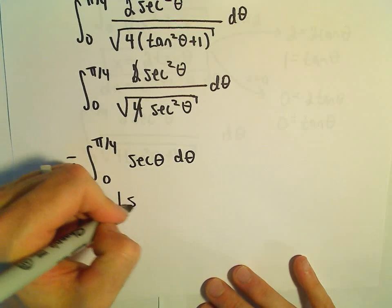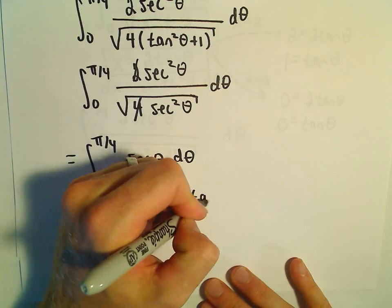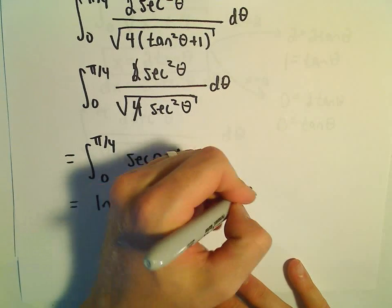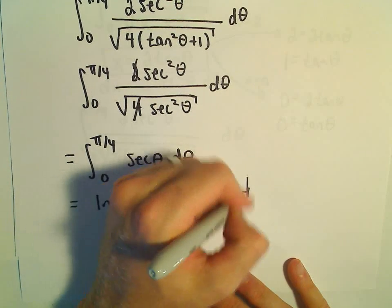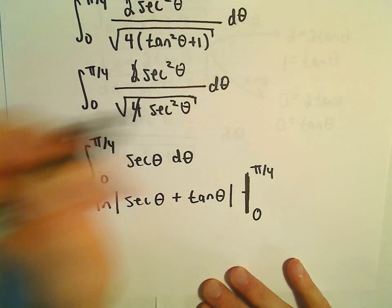The antiderivative of secant is ln|sec(θ) + tan(θ)|. This is a definite integral, so no +C. We evaluate from 0 to π/4.